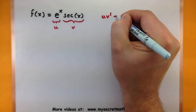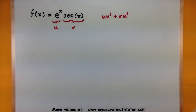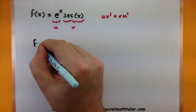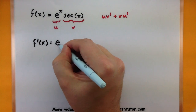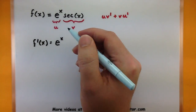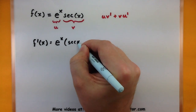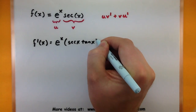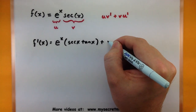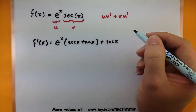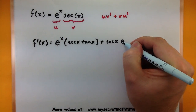The product rule: the first function times the derivative of the second, plus the second function times the derivative of the first. So let's start with our first function — that's e to the x just as it is — then multiply by the derivative of secant, which is secant of x multiplied by tangent of x. That takes care of that derivative. Plus, we'll have our second function just as it is, multiplied by the derivative of our first one, and the derivative of e to the x is e to the x.